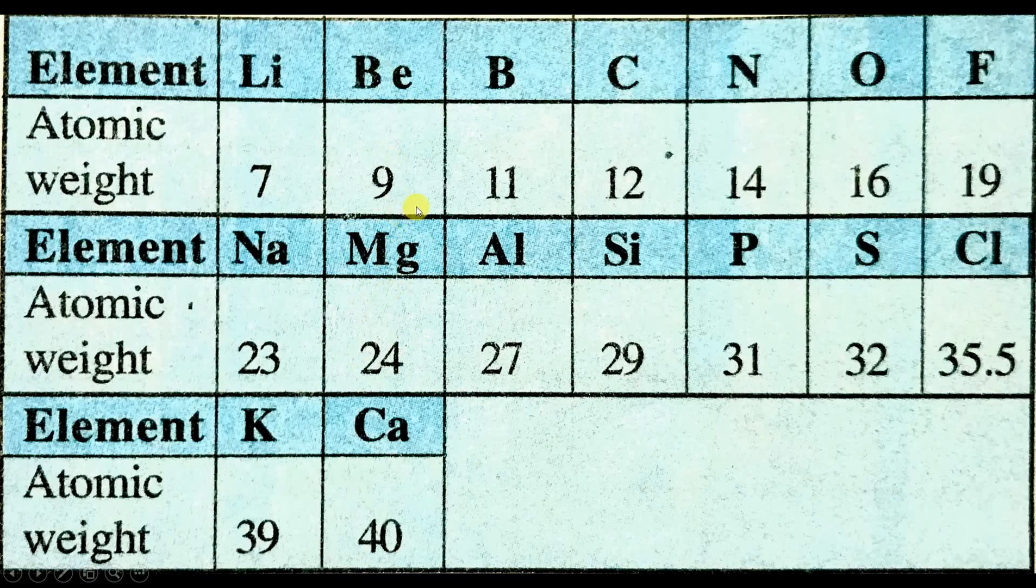He placed them one below the other. So boron and aluminium is going to have the same properties. Carbon and silicon is going to have the same properties. Nitrogen and phosphorus, oxygen and sulfur, and fluorine and chlorine will have similar properties. Sodium and potassium are going to have the same properties, whereas magnesium and calcium is going to have the same properties.